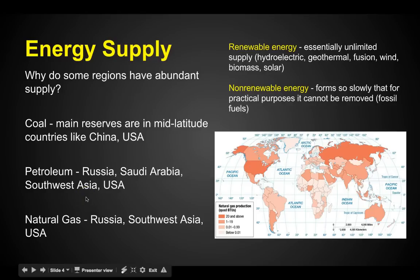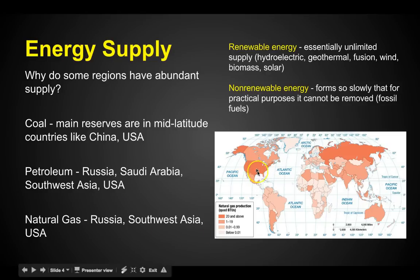Energy supply: why do some regions have abundant supply? Let's look at coal. The main reserves are in mid-latitude countries like China and the United States. Think about Pennsylvania and all these areas that have great coal reserves in the United States, but also China. They're doing really well because they have access to coal. Then there's petroleum.